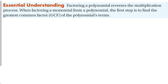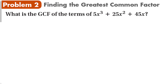When we talk about factoring a polynomial, this reverses the multiplication process. When factoring a monomial from a polynomial, the first step is to find the greatest common factor, or GCF, of the polynomial's terms. For example, the first term 5x³: 5 is prime, and the prime factors of x³ are x times x times x. So 5 × x × x × x are all the prime factors of 5x³.